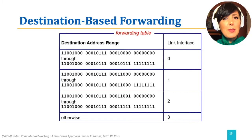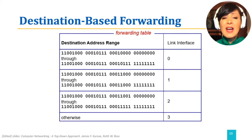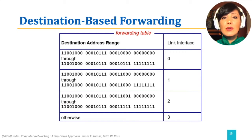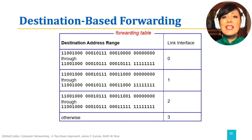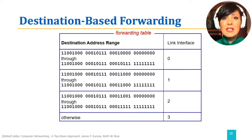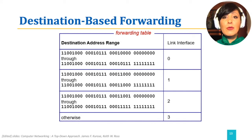For example, in the table shown in the figure, if the destination address is within the range of addresses depicted in the first row, the packet will use the outgoing port 0. If the destination address is in the second row, it will use the outgoing port 1. If within the third row, it will use the outgoing port 2. And if it is not within any of the given ranges in the previous rows of the table, it will use the default path for all other destinations, which is the outgoing port 3, depicted by 'otherwise' in the last row.